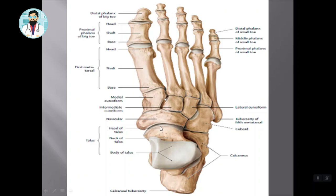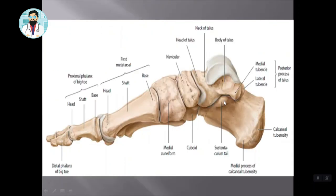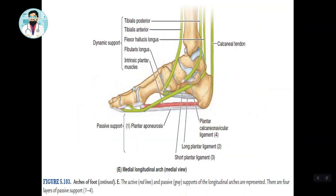In this diagram, you can see the head of the Talus, the Navicular bone articulating, and the Sustentaculum Tali. Now the most important thing is how the bones are held together. If you look at this diagram, it shows the structure of the different planes and the Ligaments that hold these bones together.